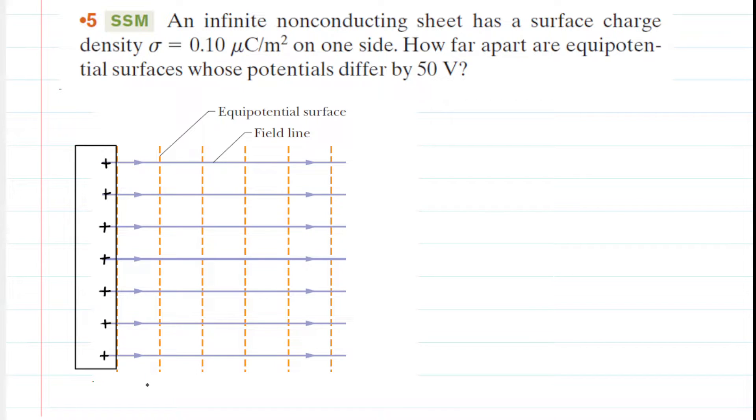If we chose this first line here, we might call that the initial potential. We could say V initial is equal to 50 volts. And then we could choose a line further away, perhaps the last line, and we can call that an electric potential final equal to 0 volts. We've chosen 50 and 0 because we were given in the question that the equipotential surfaces have potentials that differ by 50 volts. So we could use 50 volts and 0 volts.